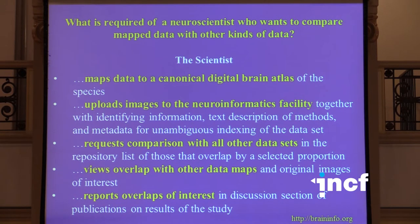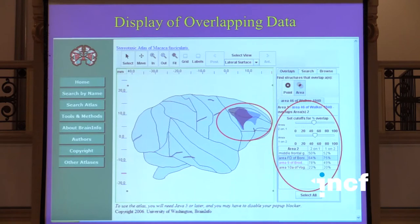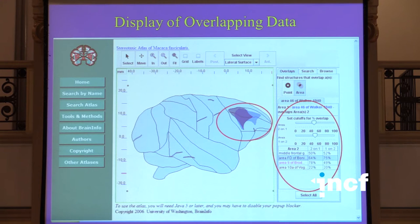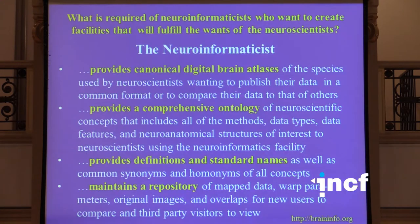If you find something particularly interesting in the list, you should be able to call up the image of that map overlaid on yours so you can visually judge. And if that's still interesting, you should be able to pull up the original image from which the mapping was done. This is what it looks like in Neuromaps where we've overlaid Walker's area 46 and Brodmann's corresponding area.